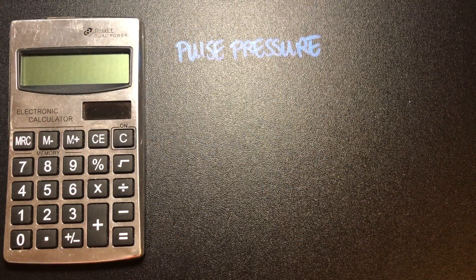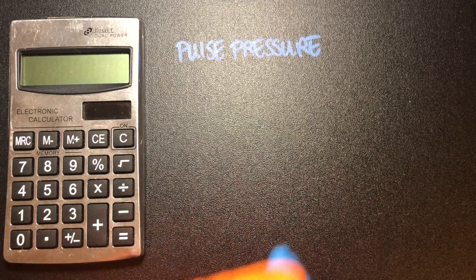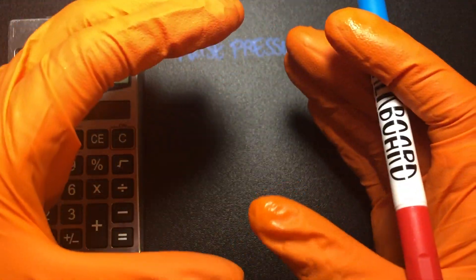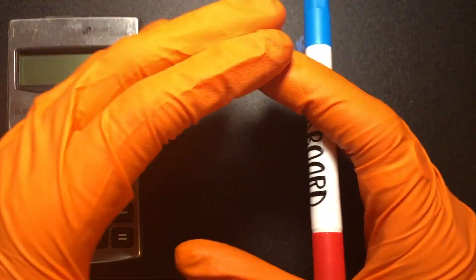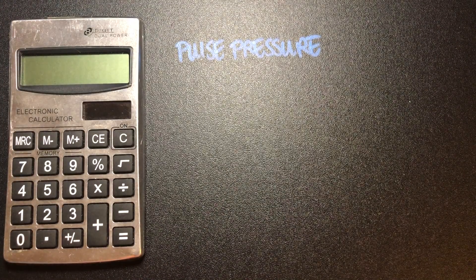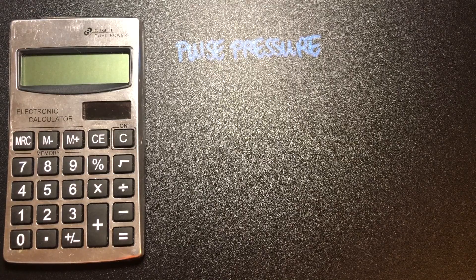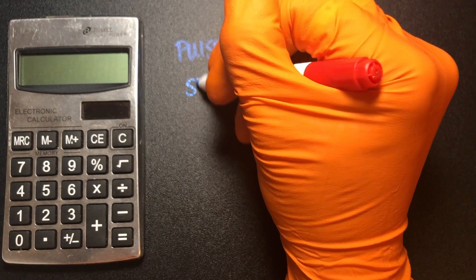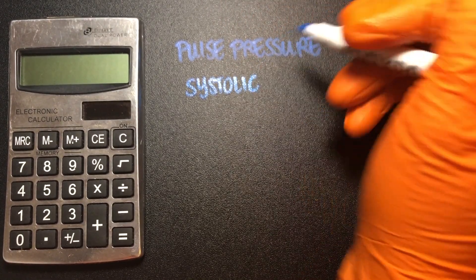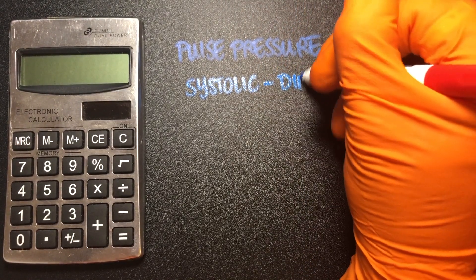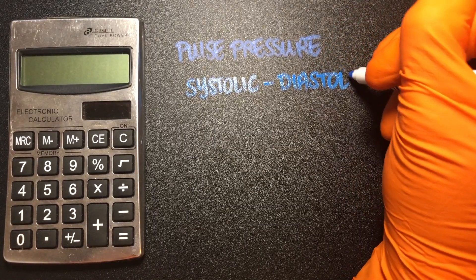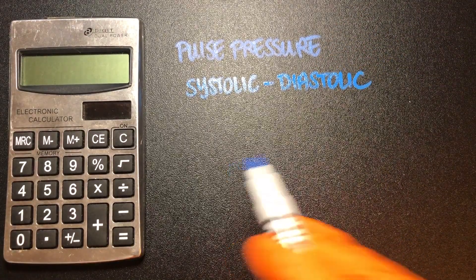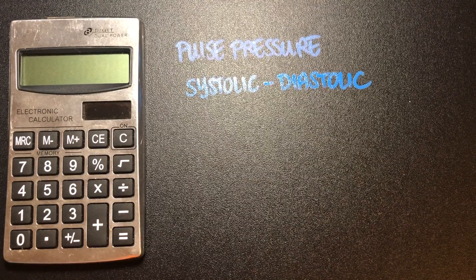Let's look at pulse pressure. Pulse pressure is going to summarize the elasticity — how well a vessel stretches — and the recoil, how well it returns to its original shape. To find that mathematically, we are simply going to take the systolic number and subtract the diastolic number: systolic minus diastolic.